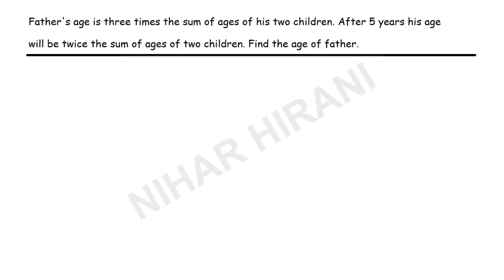Let us solve this question: a father's age is three times the sum of the ages of his two children. After five years, his age will be twice the sum of the ages of the two children. We need to find the age of the father. This is a simple question we will solve quickly.